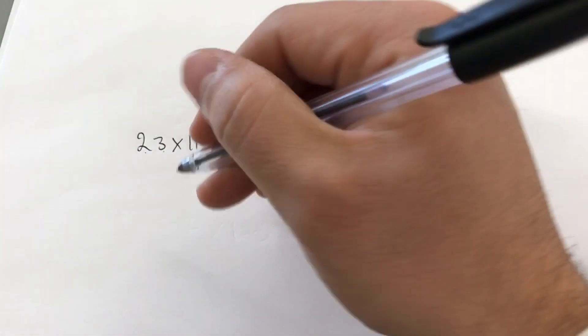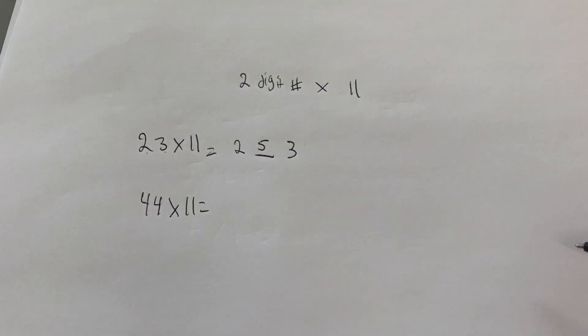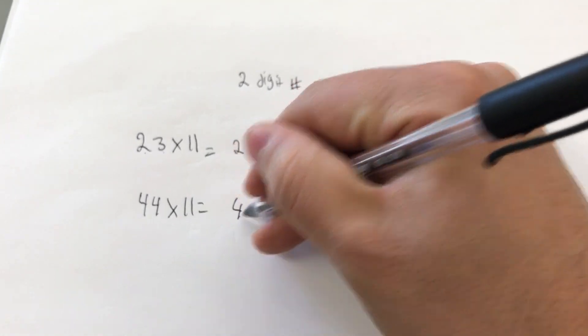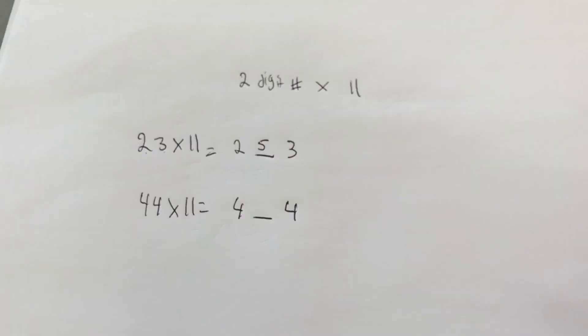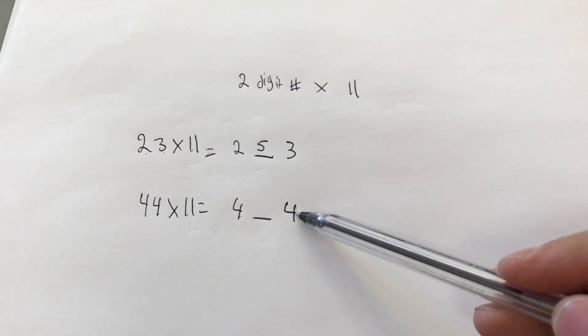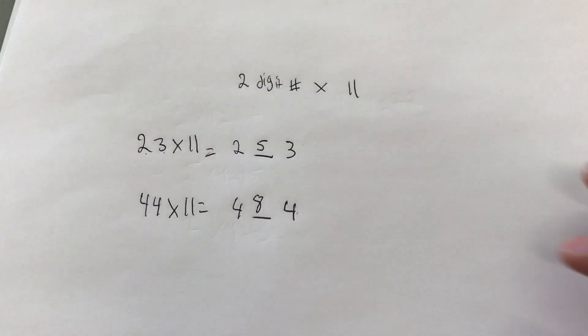Now, let's say we had a bigger number. Let's just say we had like 44 times 11. Once again, I'm going to take the 4 and the 4. I'm going to put a space between them. So 4 space 4. And then I'm going to add these two numbers together. 4 plus 4 equals 8. So I put an 8 right there. 484 is the answer.